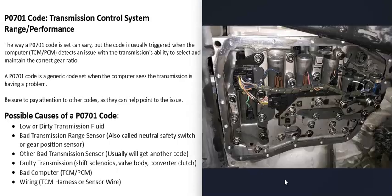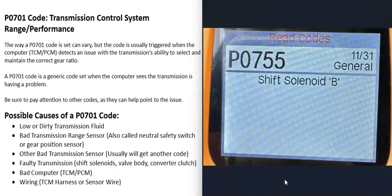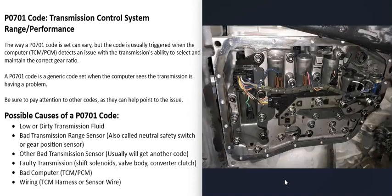Another possible cause is an internal transmission problem — things like a bad shift solenoid, bad valve body, or bad converter clutch. For example, if there's a bad shift solenoid B, which is usually associated with second gear, that's going to cause problems. Again, you'll usually get another code alongside it, like P0755 (shift solenoid B).